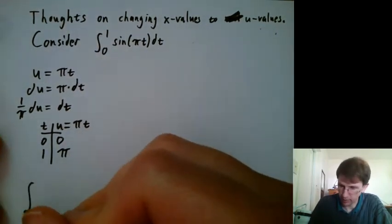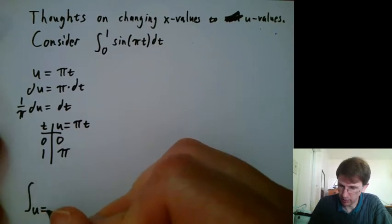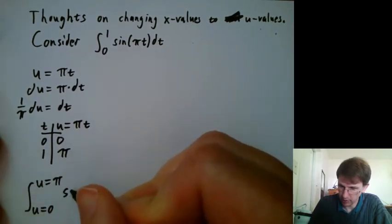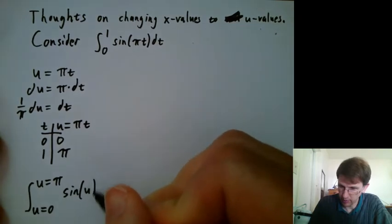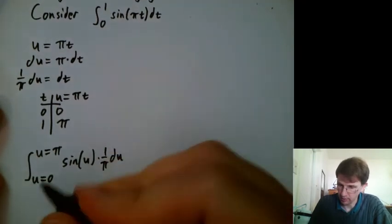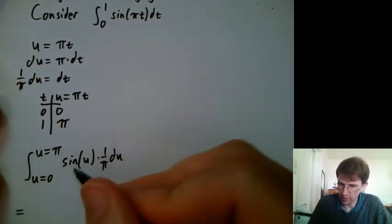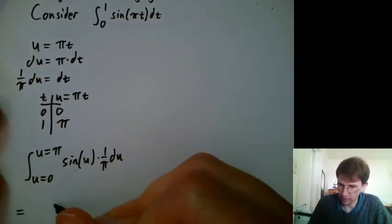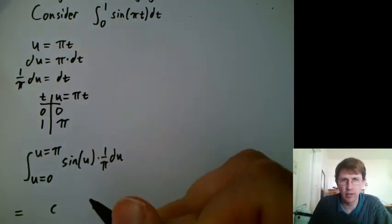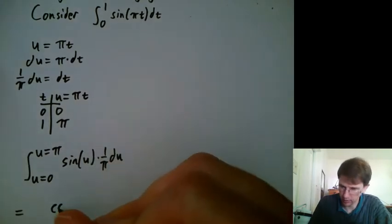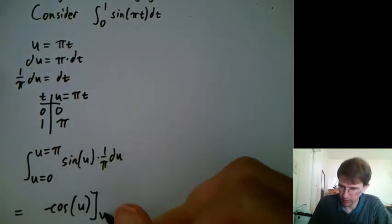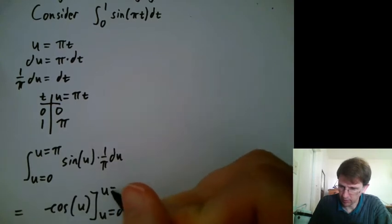And then we'd translate everything to u. So we'd say u equals 0 to u equals π sine of u times 1 over π du. And then we'd do the integration and do the actual antiderivative and say integral of sine is what? Cosine, negative cosine? Negative cosine.